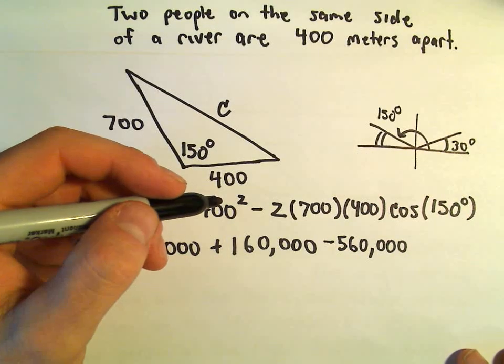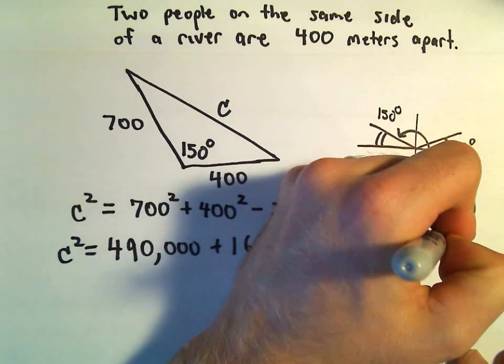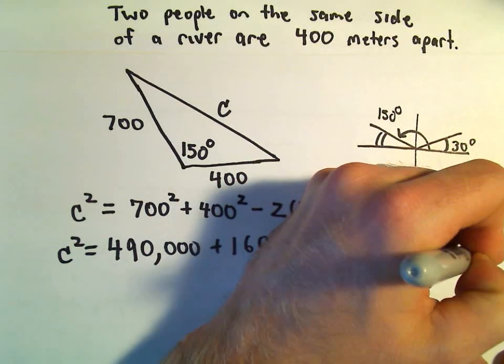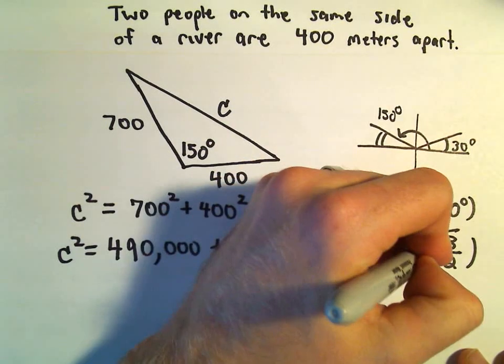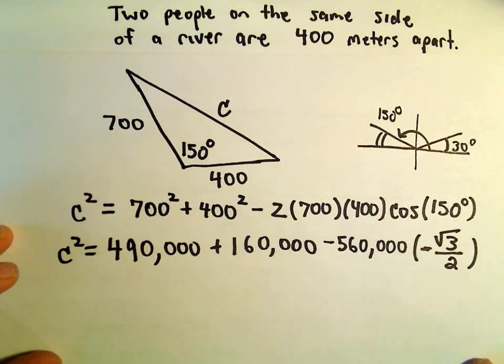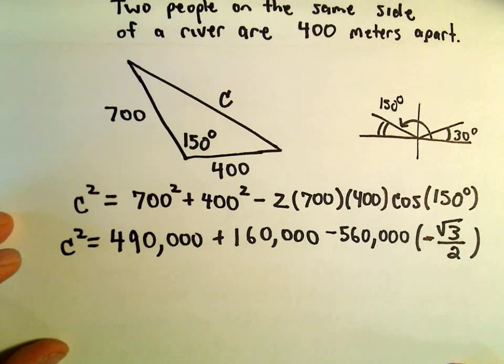If I think about cosine of 30 degrees, cosine of 30 degrees would be root 3 over 2. But since we're in the second quadrant, cosine there would be negative. So we'll get negative root 3 over 2 for cosine of 150.